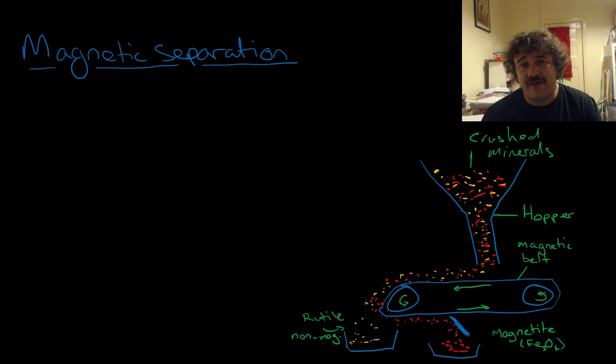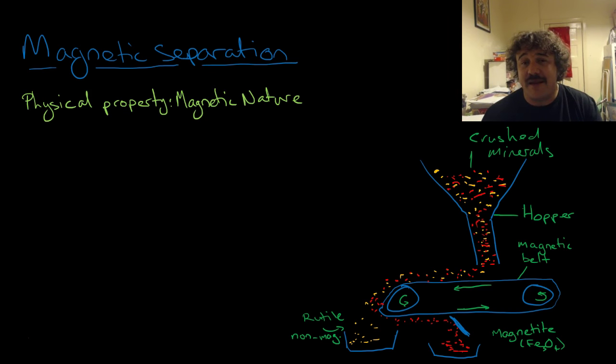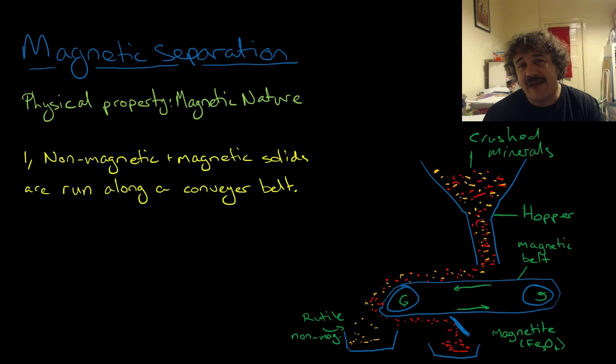Then we have magnetic separation. This is probably every science teacher's favorite one that they don't do in the classroom. The physical property is magnetic nature. The non-magnetic and magnetic solids are run along a conveyor belt. So you put them in this hopper up here. You crush your mineral up, you put it in your hopper.